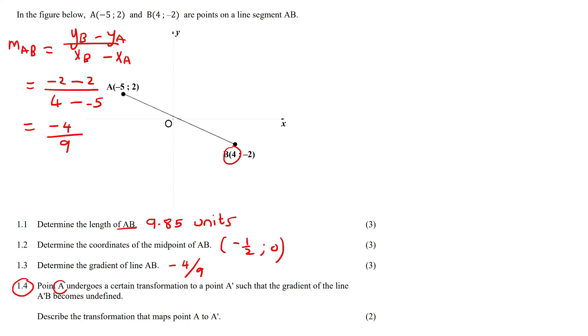They're telling us that point A is going to move, and wherever it moves to it's going to become A with a little line. They said it's going to move to such a place that the gradient of the point A with a little line - so the new A to B - will become undefined.